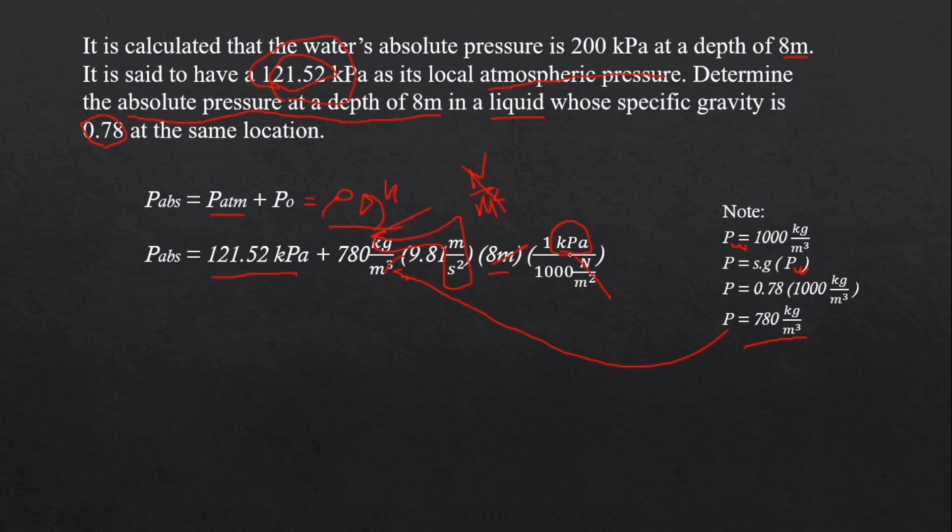To plug in all the values in the calculator, we have the answer for absolute pressure which is 182.7344 kilopascal.